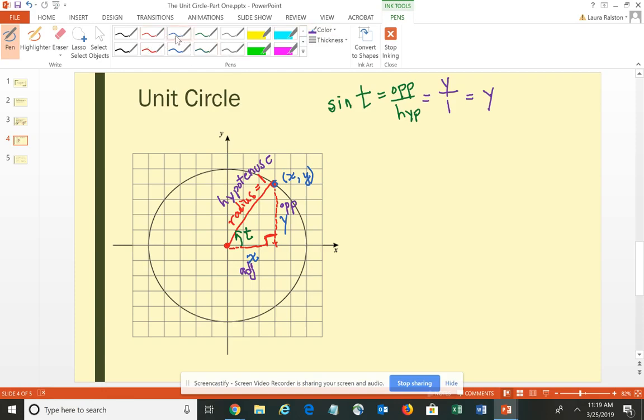Now let's think about cosine – the cosine of angle T would be adjacent over the hypotenuse, which gives us x over a hypotenuse of 1, which is x.